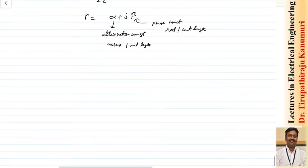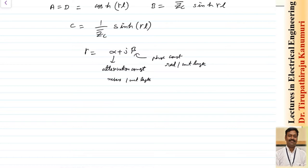Now, for calculating these hyperbolic functions — which are complex because gamma is complex — there are basically three methods. The first method is the convergent series for real angle method, also called the real angle method.